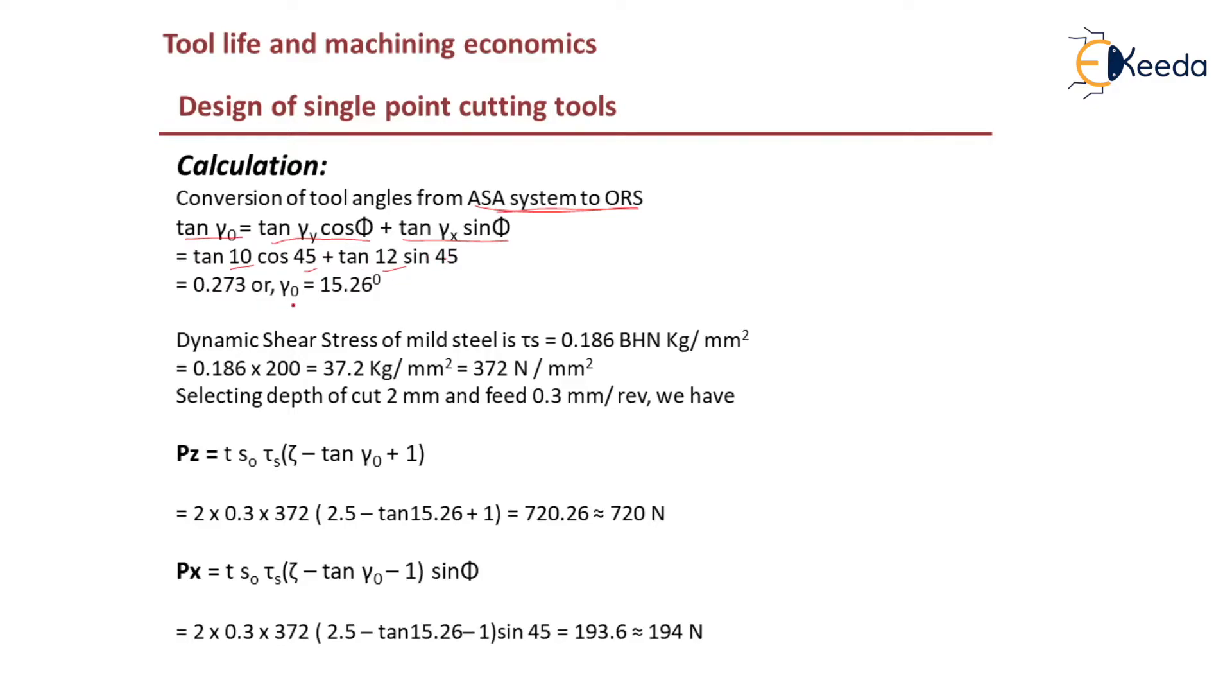You are able to find out gamma naught. Dynamic shear stress of the mild steel is tau s which is 0.186 times BHN. We know BHN number is 200, so if you substitute you will get 372 N/mm square.